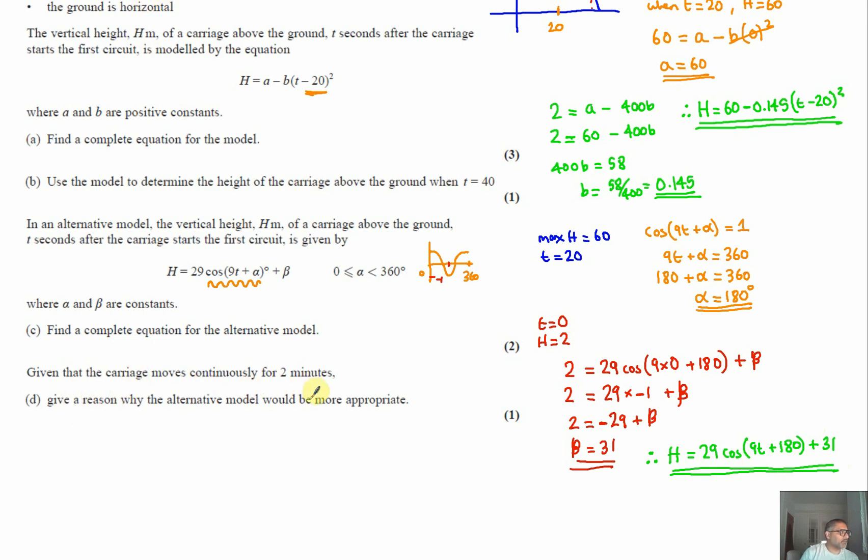Now for part D, it says give a reason why the alternative model would be more appropriate given that the carriage moves continuously for two minutes. As I said before, if you've got the graphical calculator, I would strongly advise you to check your answers as you're going through this by plugging that in and seeing what the graphs look like.